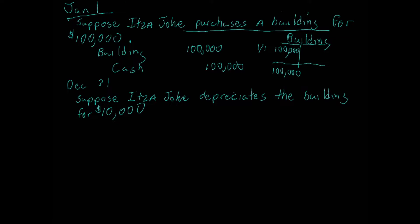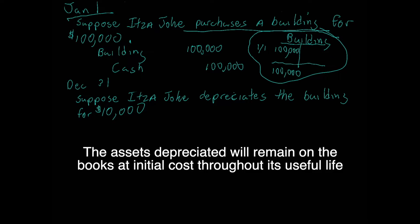Building is an asset and it's going up, so we're going to debit building for one hundred thousand, and cash is also an asset but it's going down, so we're going to credit cash for one hundred thousand. Focus on the building account — we have this building on the books at one hundred thousand dollars, which is the cost of the asset. It will remain on the books at one hundred thousand dollars throughout its life, even as we depreciate it.